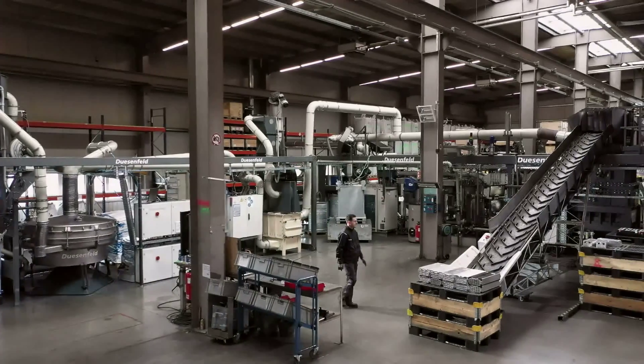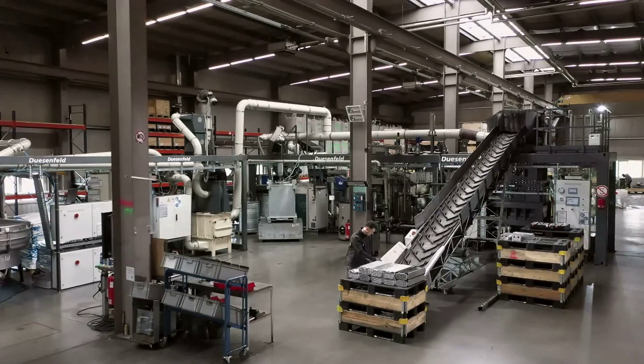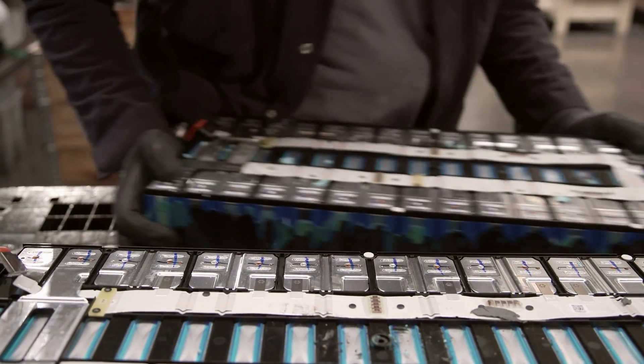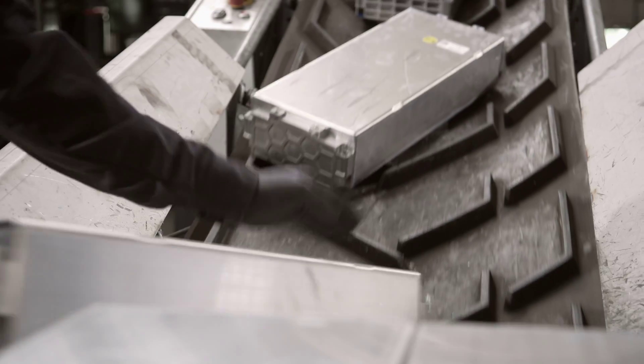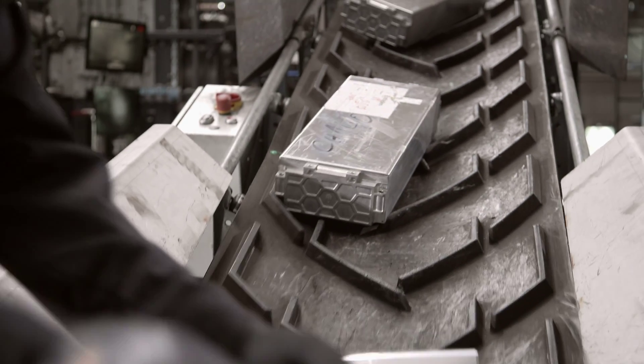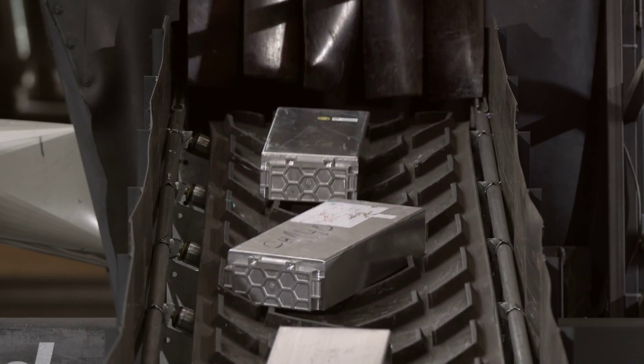After dismantling the battery, the technicians place the modules, or even the individual cells, onto a conveyor belt. These contain valuable raw materials such as cobalt, nickel, manganese, and lithium. Half a ton of material per hour can be transported to a shredder in this manner.